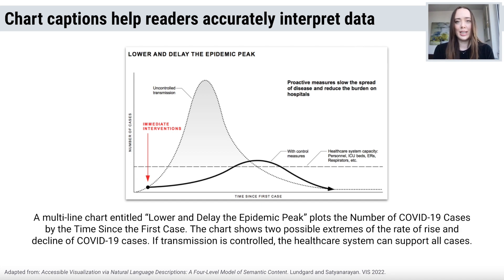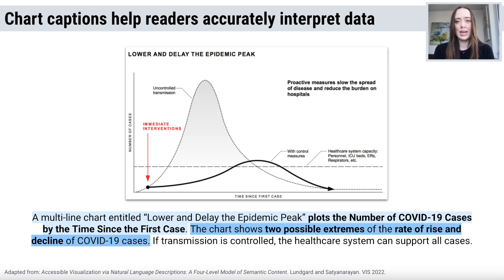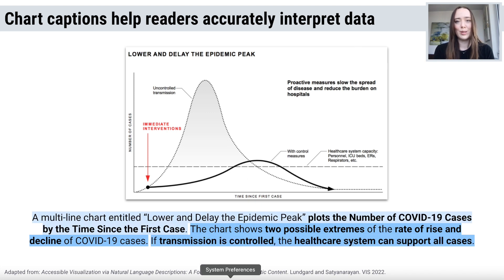Chart captions are particularly important because they help readers properly interpret the data and understand the chart's takeaways. Good captions contain various levels of semantic content, including low-level information about what is being plotted, as well as higher-level content that describes the relationships between data points and synthesizes important patterns.